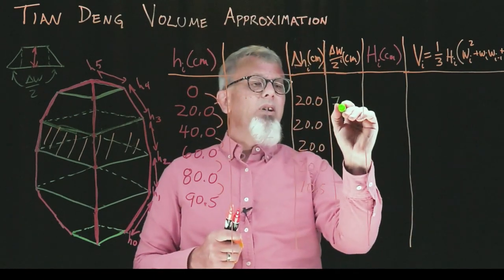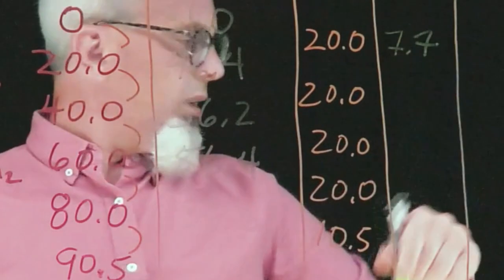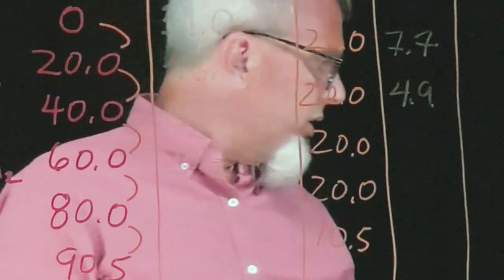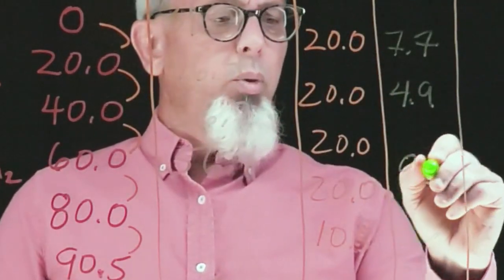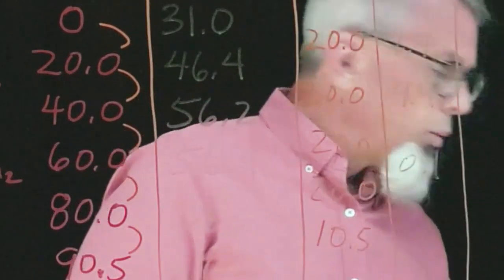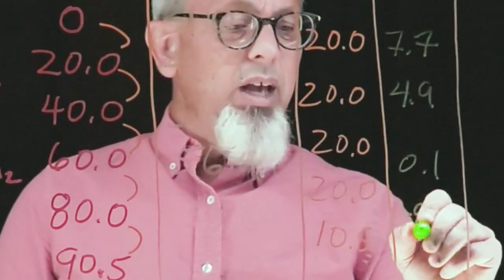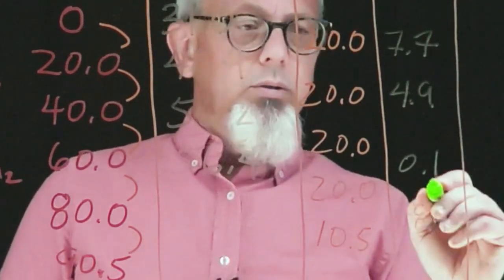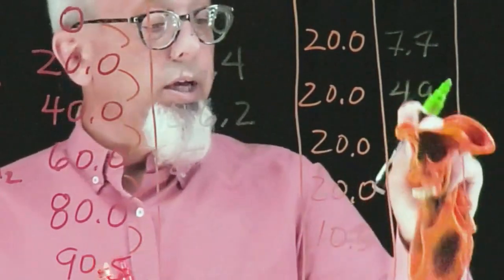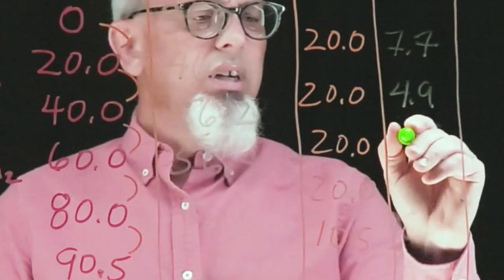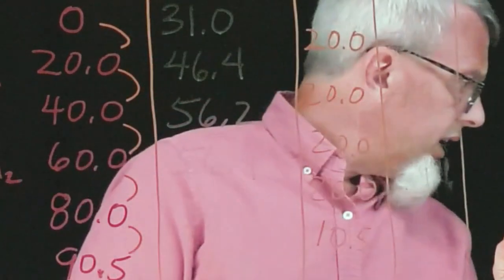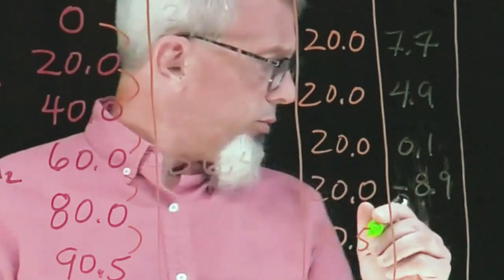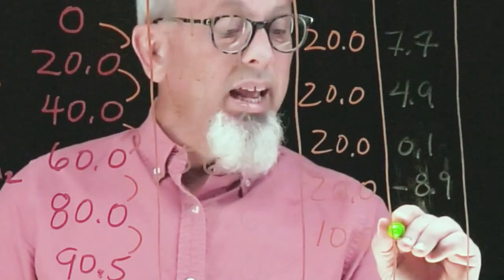I've pre-calculated those. We have 7.7 centimeters, 4.9 centimeters, 0.1 centimeters, negative 8.9 centimeters, and finally a value of negative 19.3. Now, the negatives might seem to be a little worrisome, except we don't really have to care about them here, because in a moment we're going to square them.